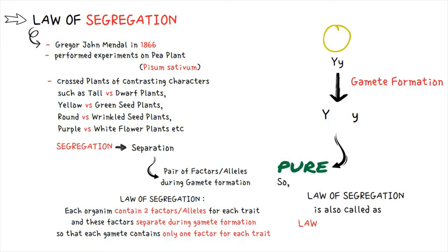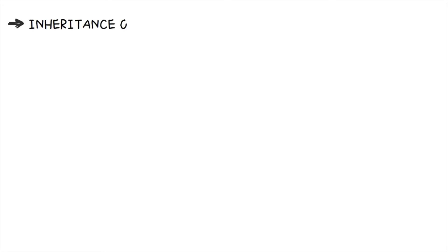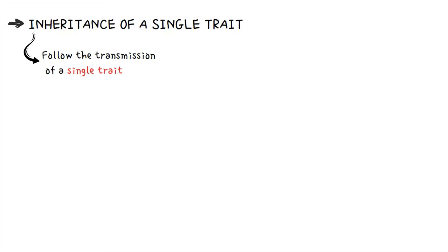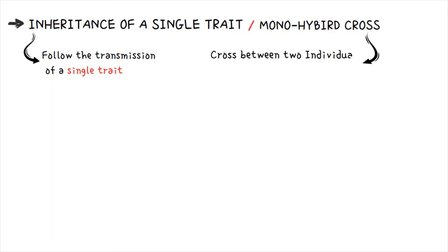Since each gamete has a single copy of the pair, these gametes are said to be pure. That is why the Law of Segregation is also called the Law of Purity of Gametes. Now we are going to talk about the inheritance of a single trait. Mendel followed the transmission of a single trait in experiments also known as monohybrid cross.